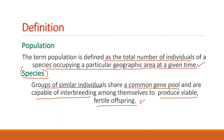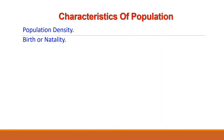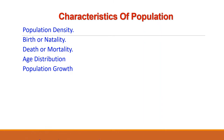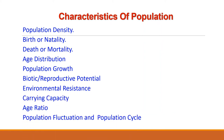Population ecology can be studied on the basis of three major areas: population characteristics, population dynamics, and population regulation. The characteristics of population include: population density, birth or natality, death or mortality, age distribution, population growth, biotic or reproductive potential, environmental resistance, carrying capacity, age ratio, population fluctuation and population cycles, and population dispersion.